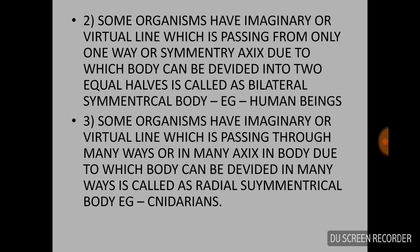The second type is bilateral symmetry, where only one imaginary line passes through the body dividing it into two equal halves, such as human beings. The third type is radial symmetry, where imaginary lines can pass through the body in many directions along many axes, dividing it into equal halves in many ways. This is called radial symmetrical body, and an example is Cnidarians.